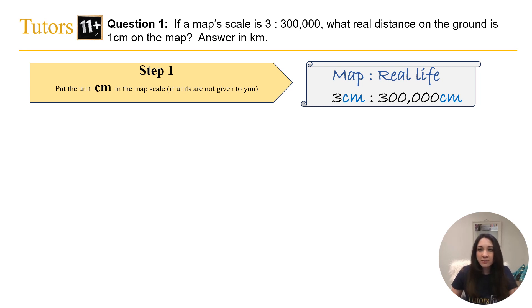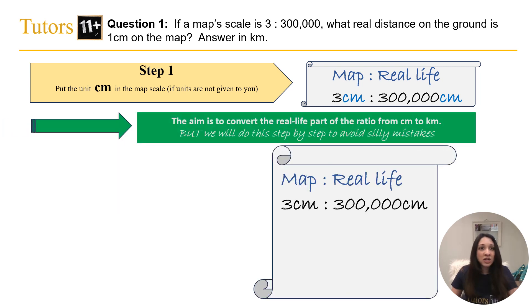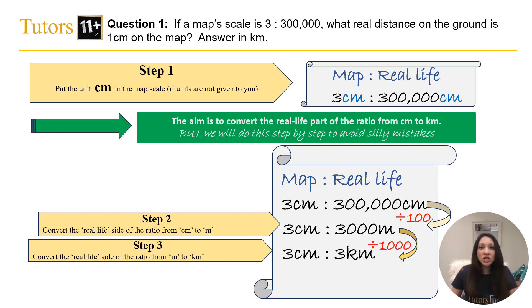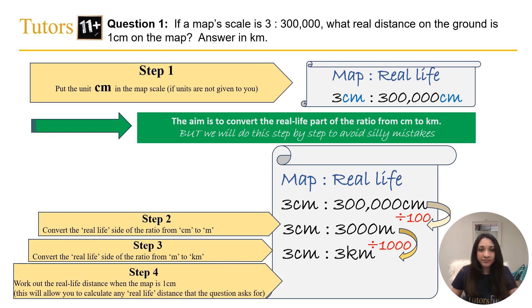Step 2, convert the real life side of the ratio from centimeters to meters by dividing by 100. This will give us 3000 meters. Step 3 then is to convert the real life side of the ratio from meters to kilometers. Dividing this by 1000 then gives us 3 kilometers. And then lastly, to answer any question given, calculate the real distance when the map is 1cm. Here, we just need to divide by 3 to give us 1km. There you have it. Now we know that 1cm on the map is equivalent to 1km on the ground.